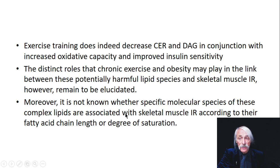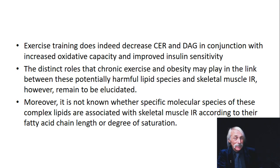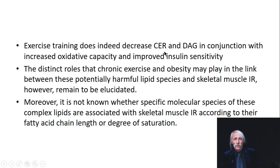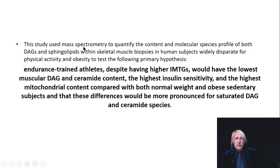Not yet known whether specific molecular species of ceramide matter — what fatty acid is amide-linked? It could be behenic acid (C22 saturated) or oleic acid — totally different structures, and those are actually biomarkers for where the ceramide is made. Endurance training athletes, despite having higher IMTGs, have the lowest muscular DAG and ceramide content, the highest insulin sensitivity, and the highest mitochondrial content.